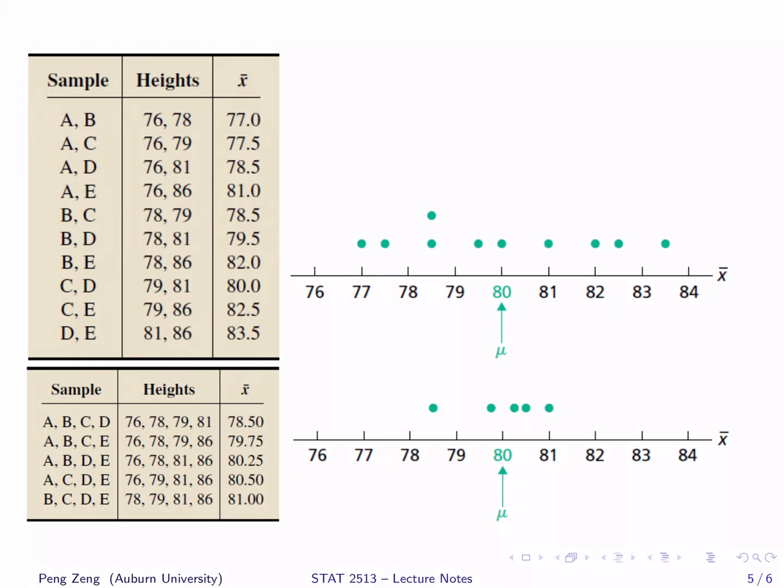Now let's check the variability of x̄. Compare the two dot plots. It is clear to observe that the dots in the second plot are more concentrated around 80. It indicates that as the sample size increases, the variability of the sample means decreases.